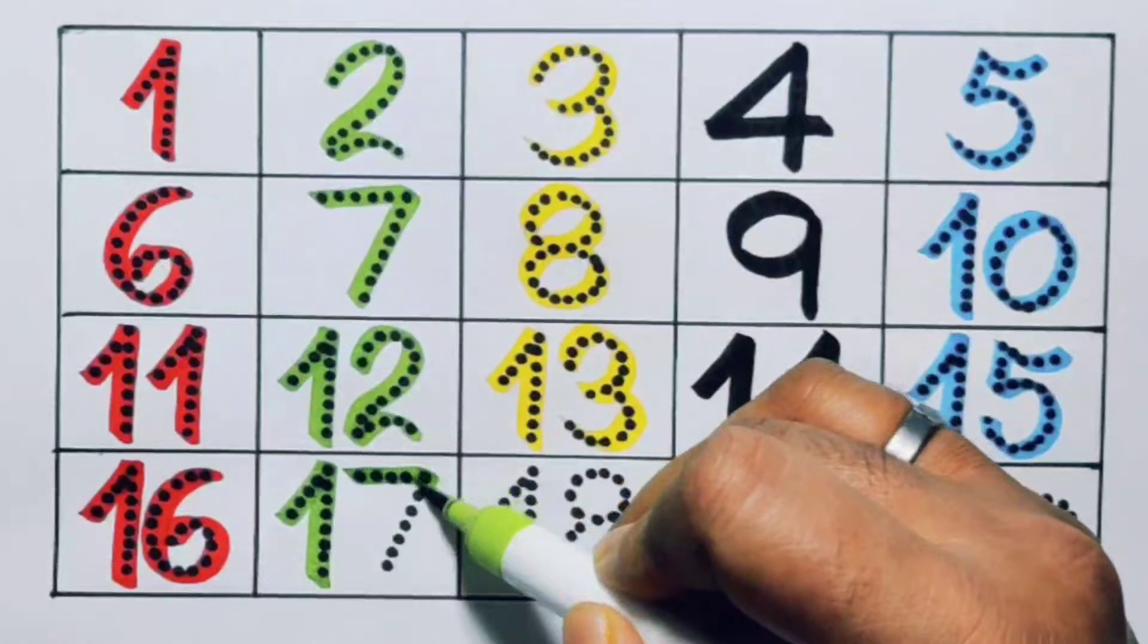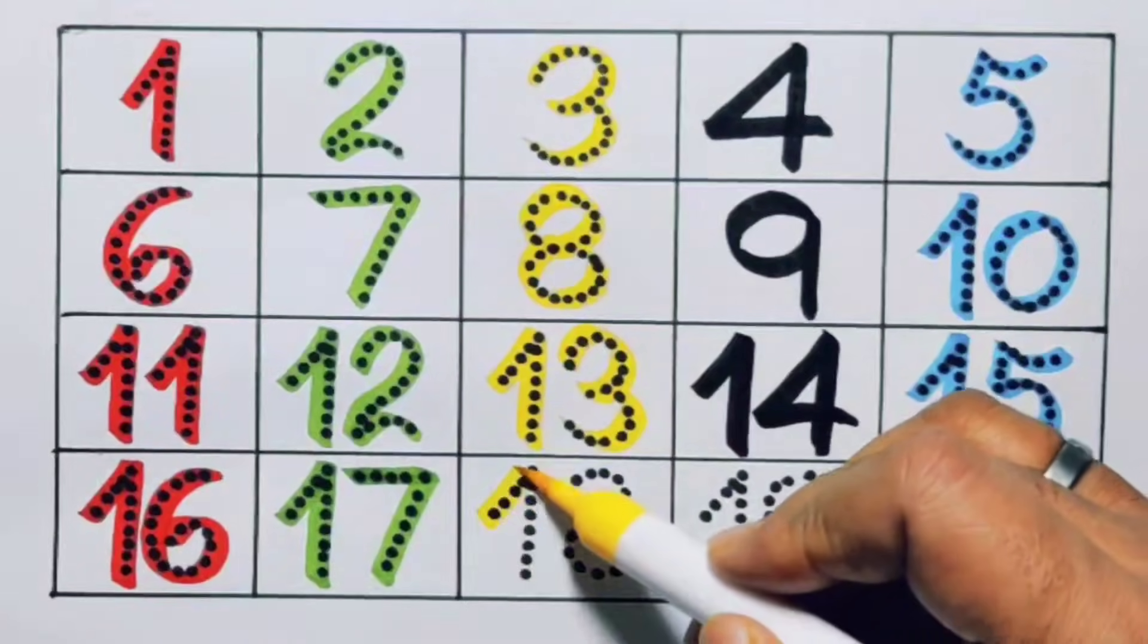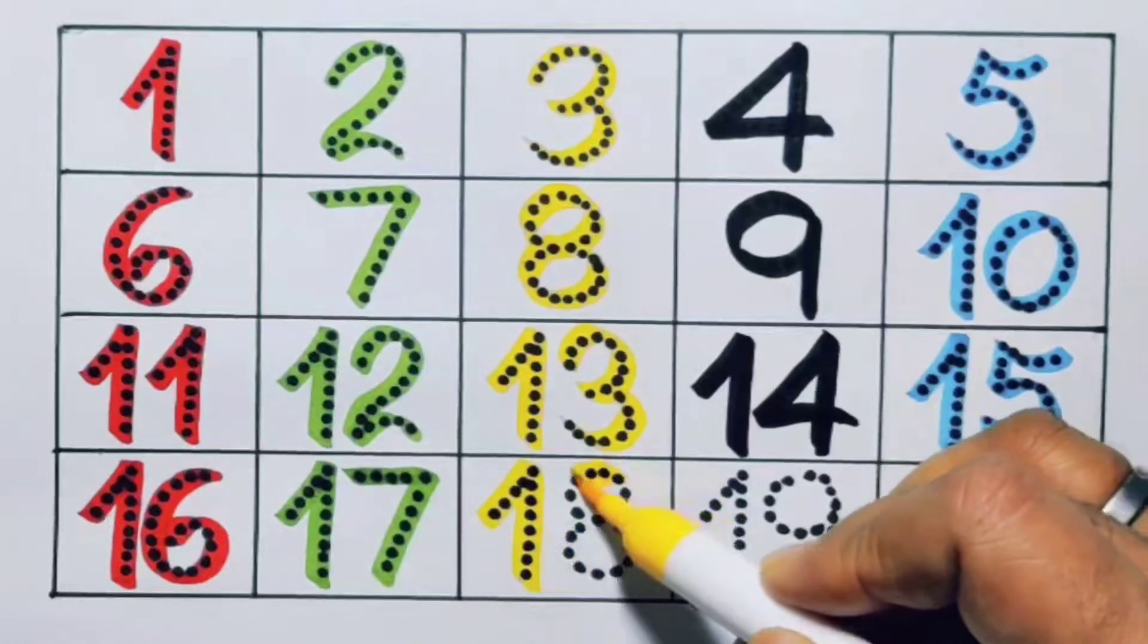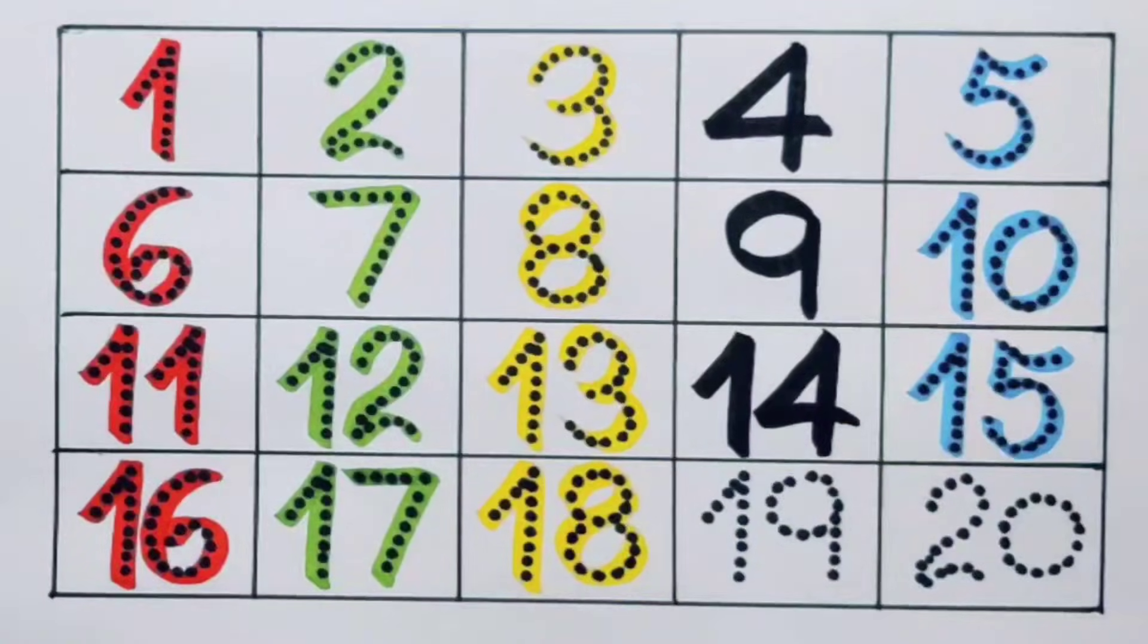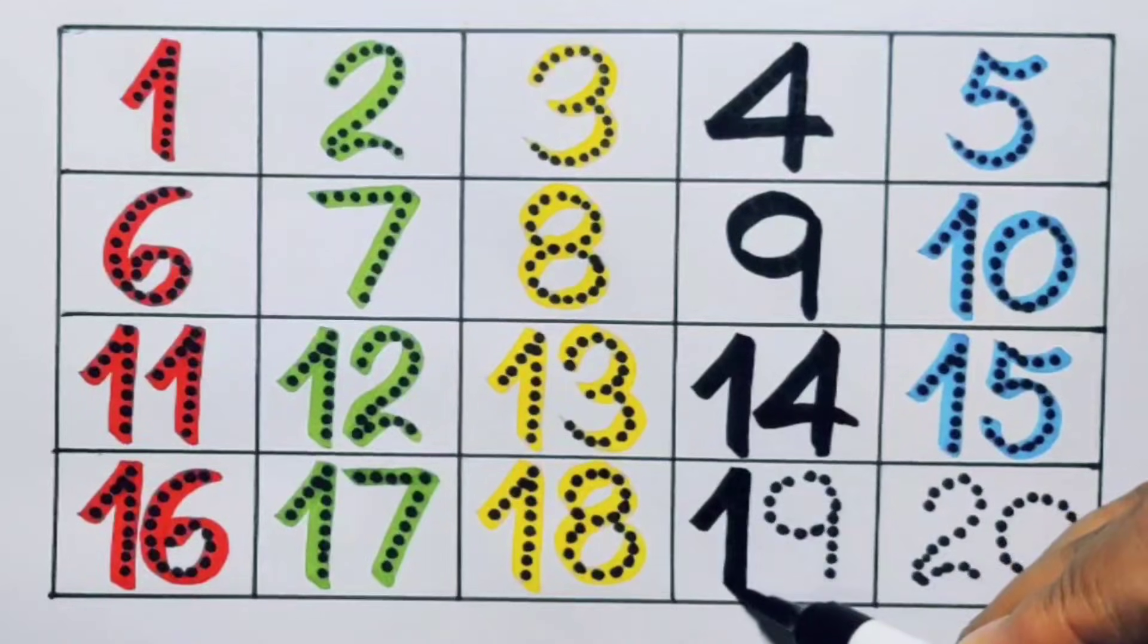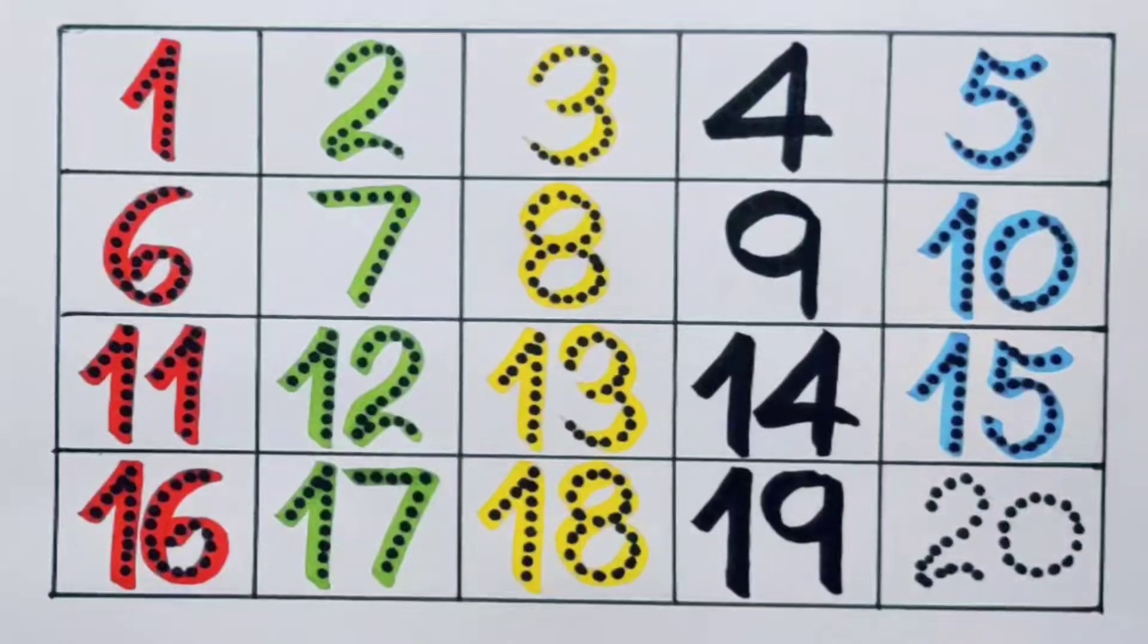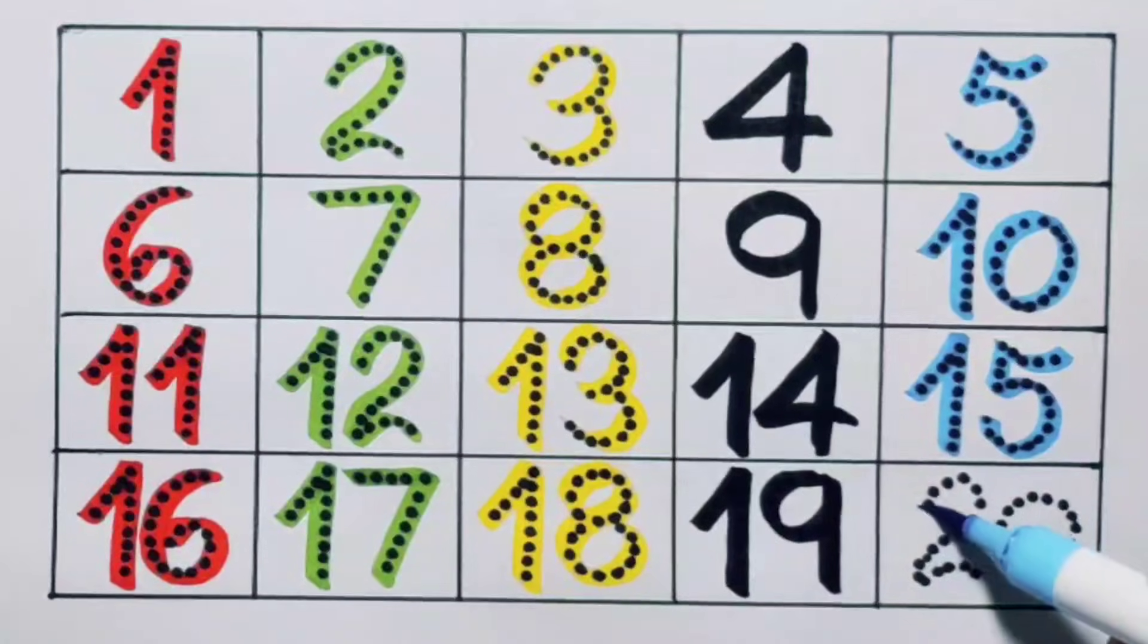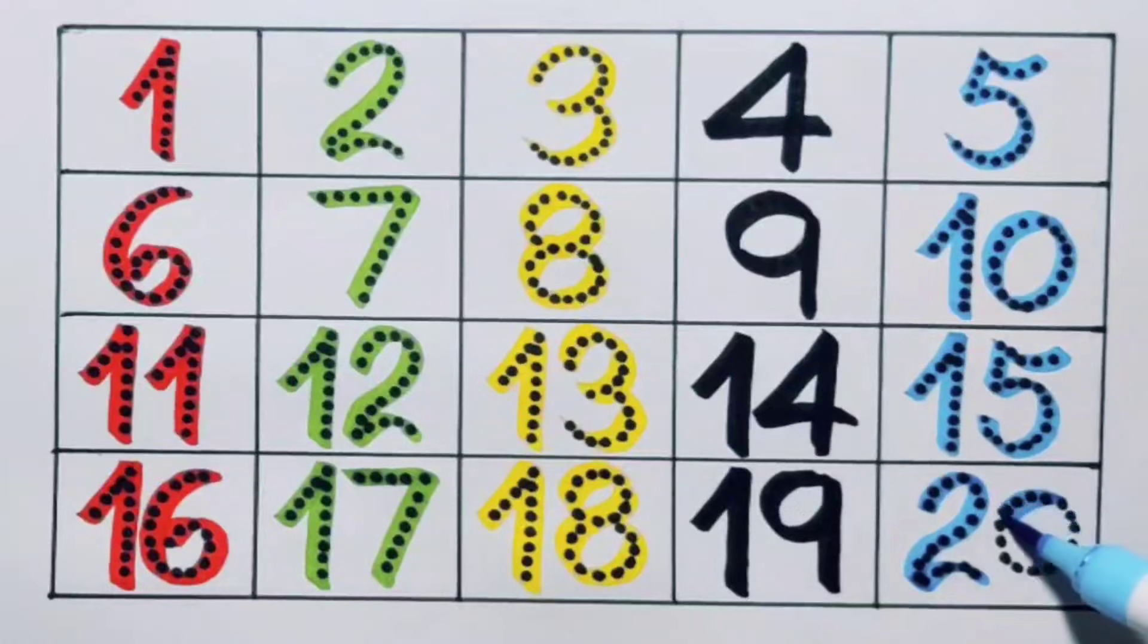Next, eighteen, one eight, eighteen, number eighteen. Next, nineteen, one nine, nineteen, number nineteen. Next, twenty, two zero, twenty, number twenty.